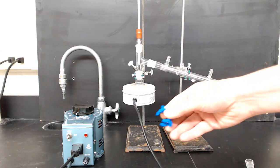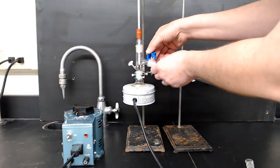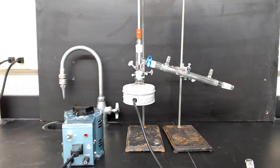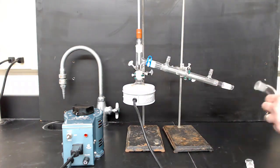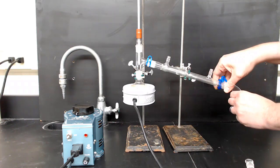Then secure with one of these blue Keck clamps. Next, get a vacuum adapter, which looks like this, and secure that to the end of the condenser, again using a Keck clamp.